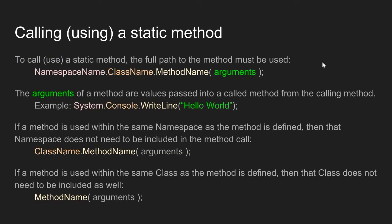Let's talk about how you call a static method — calling a method means how do we use it. Typically a method is called from another method. In order to call a static method, you need the full path to the method name. Methods are defined inside classes, and classes are defined inside namespaces. So if you want to use a method from another class in another namespace, you specify the full path to that method.